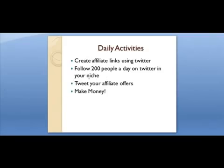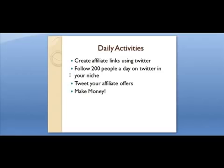Once you've set up your 10 to 12 Twitter accounts, you need to do some daily activities. First, create your affiliate links — you only have to do that one time. Then every day you want to do maintenance: follow 200 people daily in whatever niche you're in. If you're in the MLM or make money niche, select products on Clickbank that help those individuals. Follow people who would be interested in the products you're trying to sell.